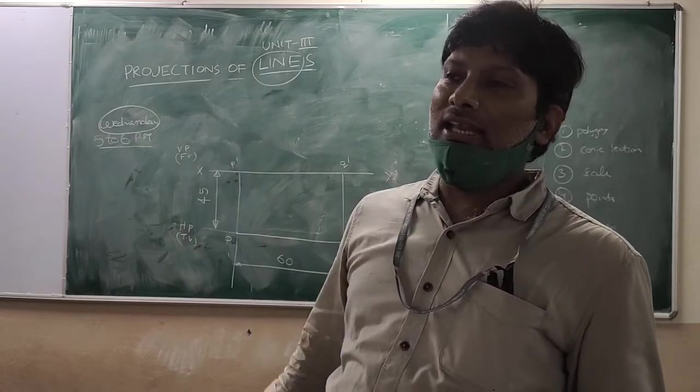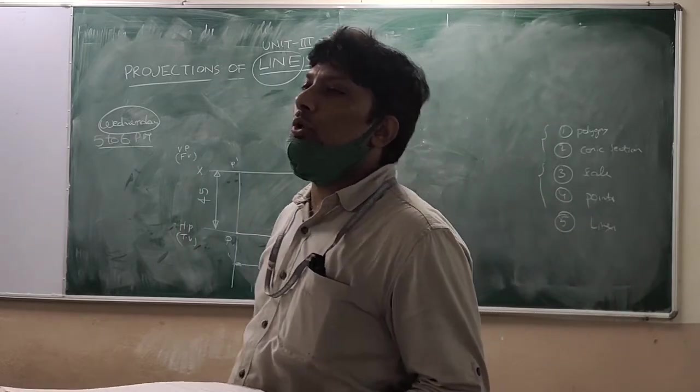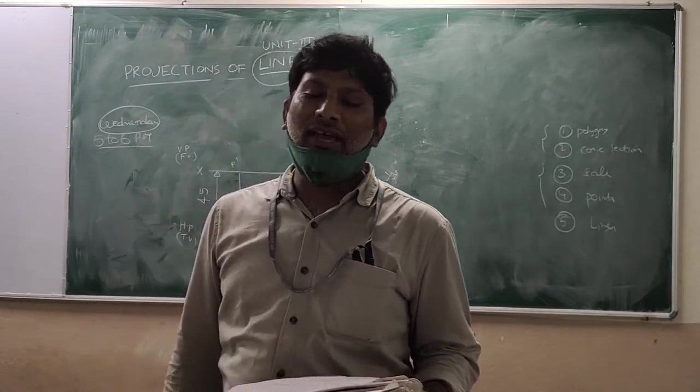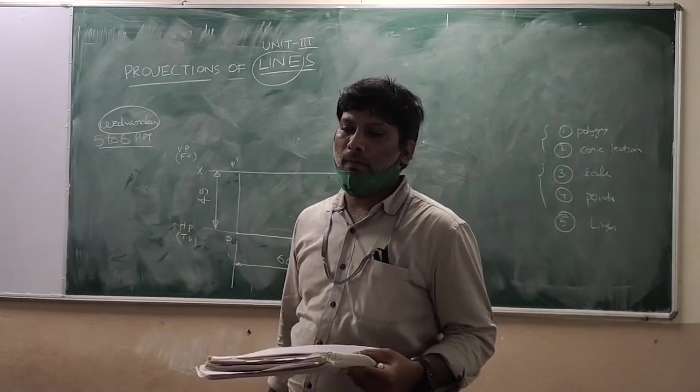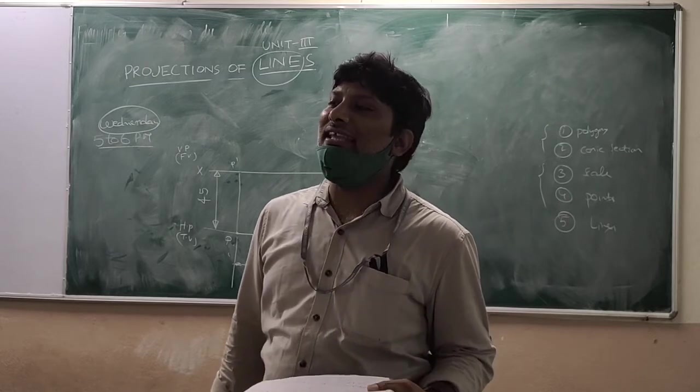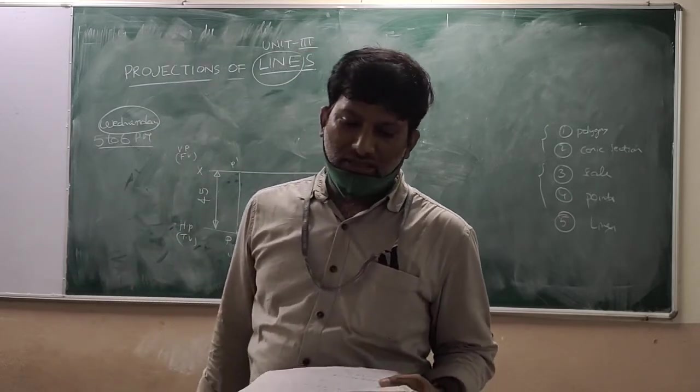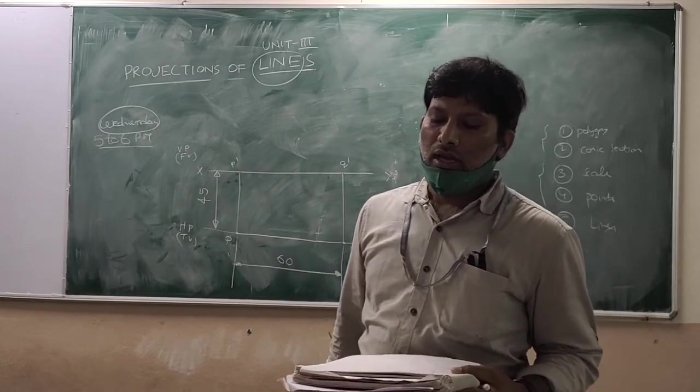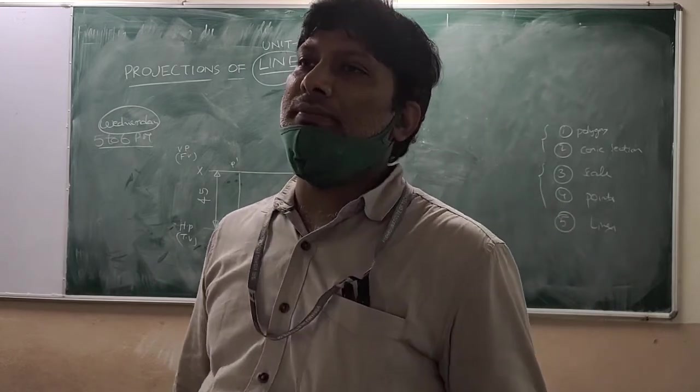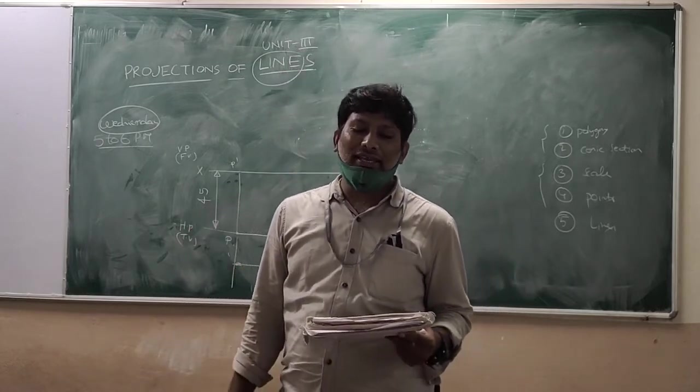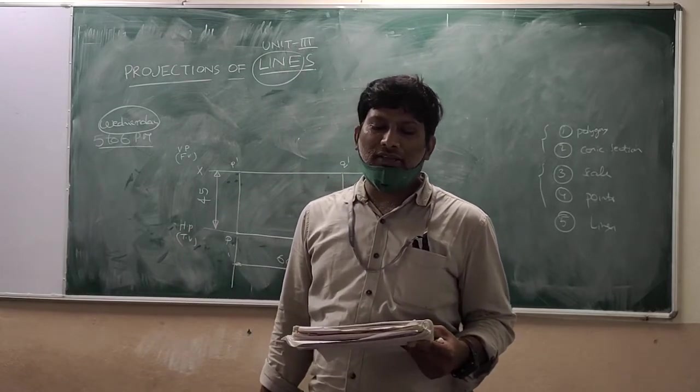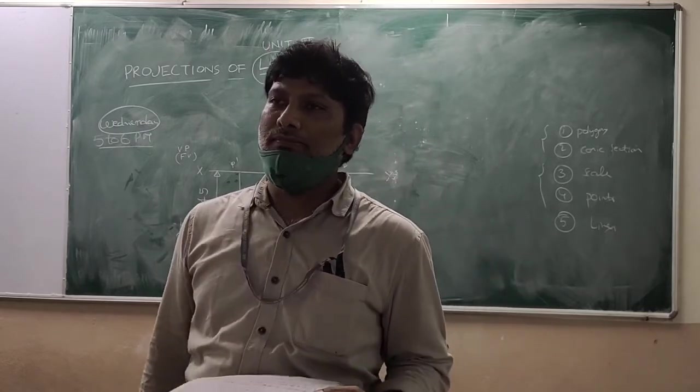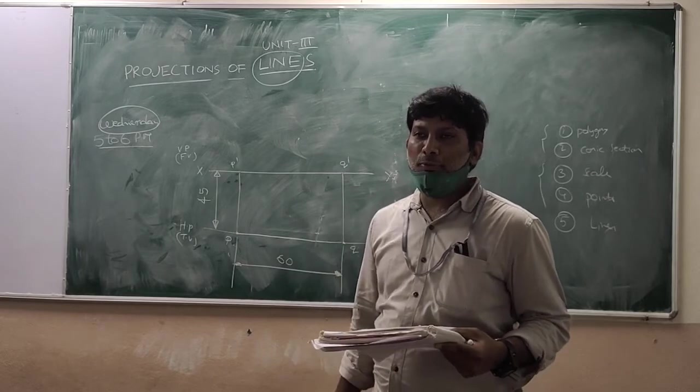Line contained in VP and parallel to ground. Note down. A line AB, 55mm long, is lying in VP and 45mm above HP. Draw its projections.